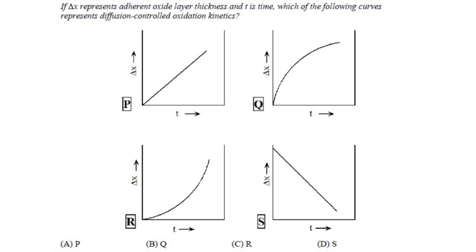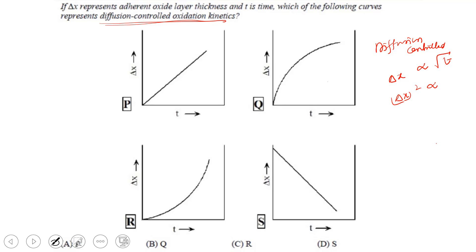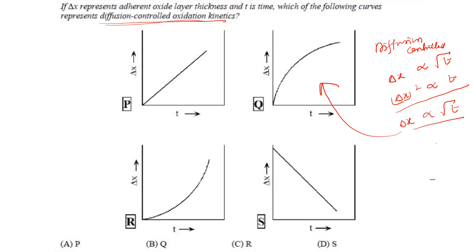Next: if δX represents adherent oxide layer thickness and t is time, which curve represents diffusion-controlled oxidation kinetics? Whenever there is a diffusion-controlled mechanism, the layer thickness follows the parabolic law: δX ∝ √t, or equivalently δX² ∝ t. This matches option Q, which corresponds to option B — so the correct answer is option Q (parabolic behavior).